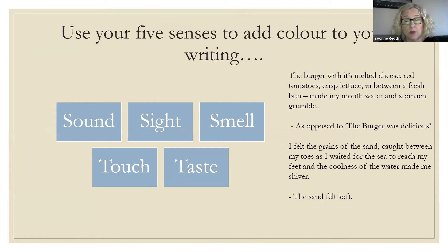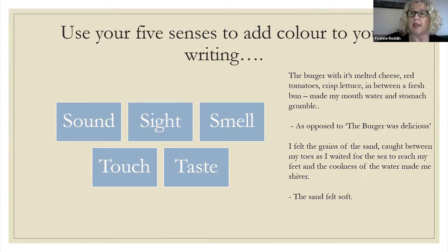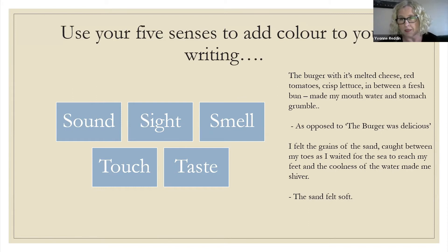Another way to add color to your writing is by using your five senses: sound, sight, smell, touch, and taste. If you're working in the music industry writing a review of a band or event, you'd use all of these and it makes your writing much more colorful. Even in the food industry — instead of saying 'the burger was delicious,' you could say 'the burger with its melted cheese, red tomatoes, crisp lettuce in a fresh bun made my mouth water and stomach grumble.' It sounds a lot better.